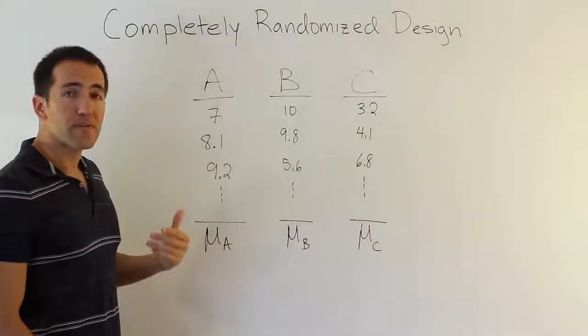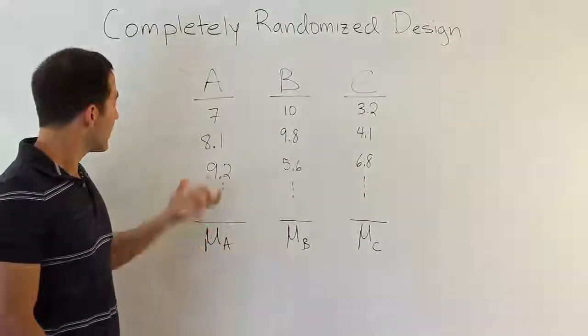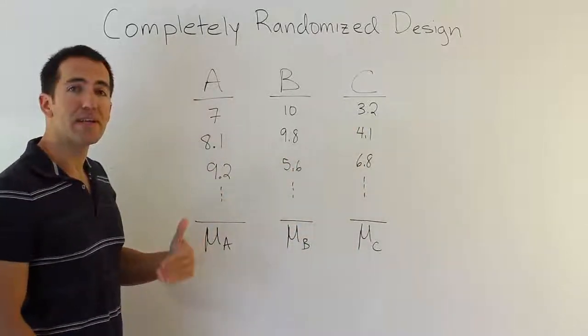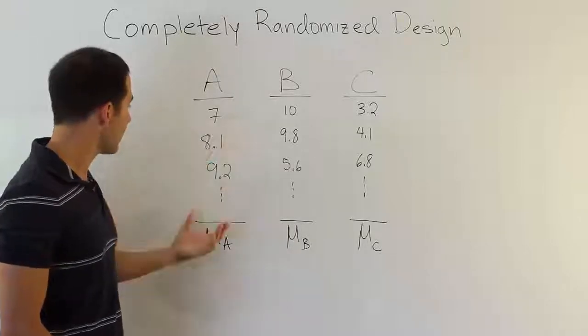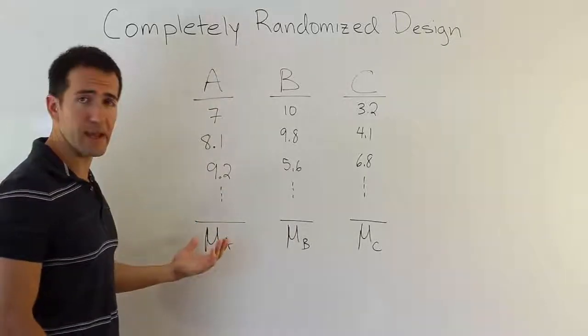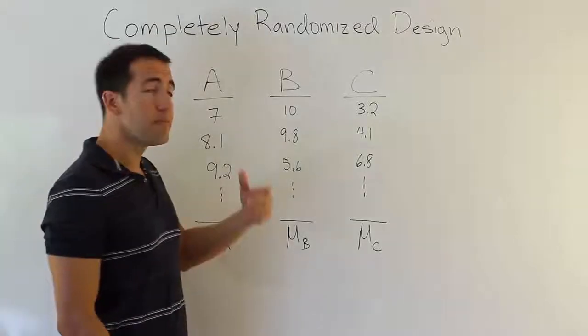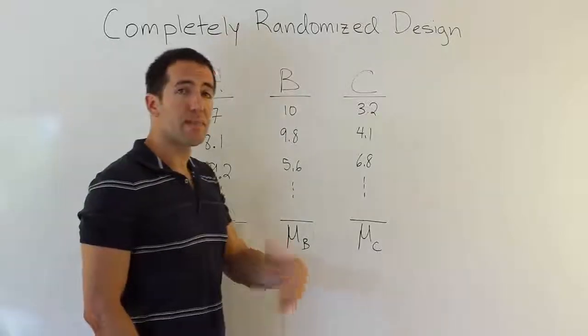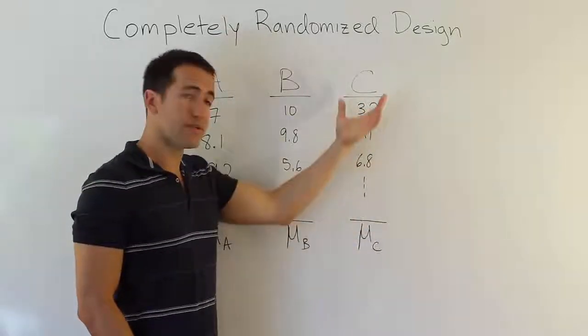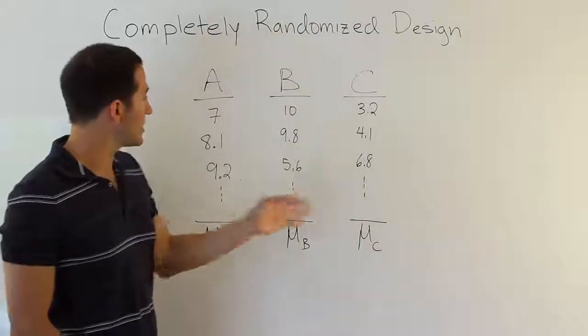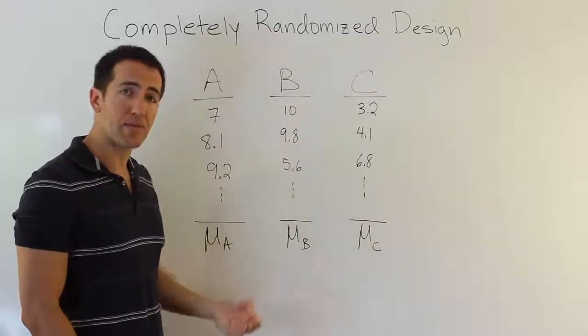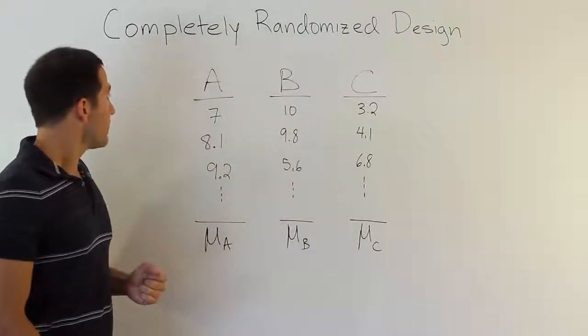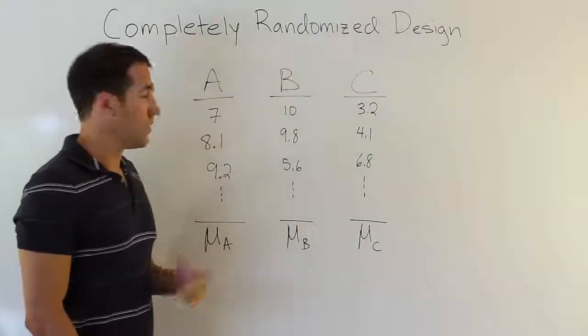What's key about a completely randomized design is that the subjects that are applied to each of these must come from independent random samples. I would go out and collect a sample of people that are going to get treatment A, then collect another independent random sample for treatment B, and another independent random sample for treatment C. The key idea here is that each of these samples are independent from one another and they're randomly assigned to the treatment that you give them. That makes the completely randomized design experiment setup.